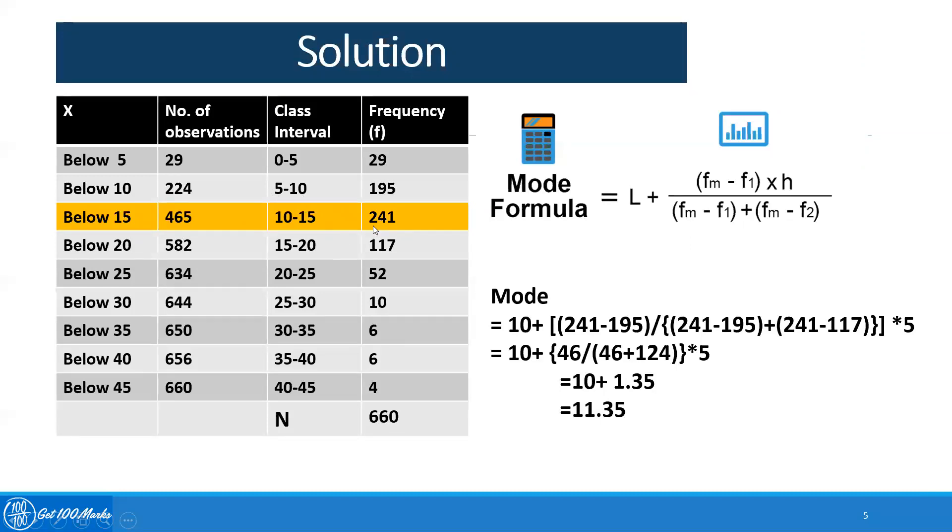Similarly we have to calculate for all the class intervals. Once we identify the frequency, we have to find the modal class. Again, I have highlighted the modal class, which is the class of the highest frequency. If we compare all the frequencies here in the fourth column, you see 241 is the highest frequency.